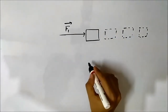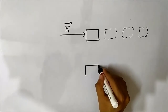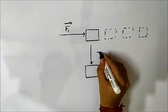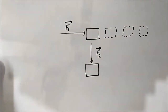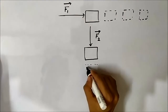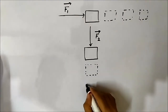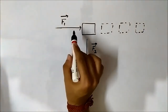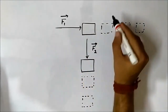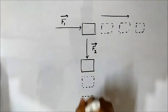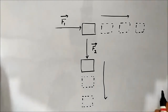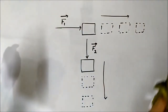Now consider the same object separately. A vertical force in the downward direction, F2, acts on it. Because of this, the object will move downwards and keep on moving downwards. So the horizontal force F1 forces the object to move towards the right, and the vertically downward force F2 forces it to move downwards.